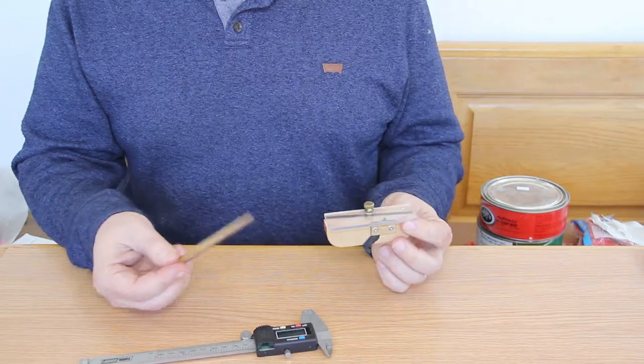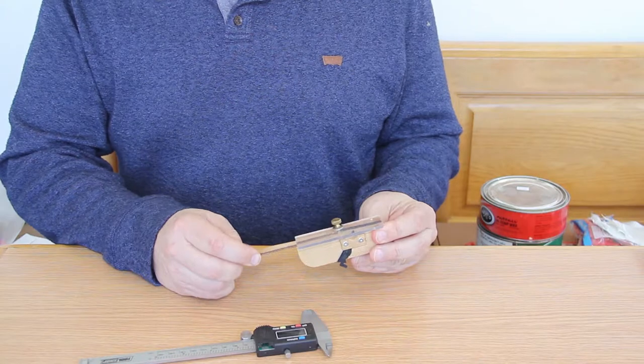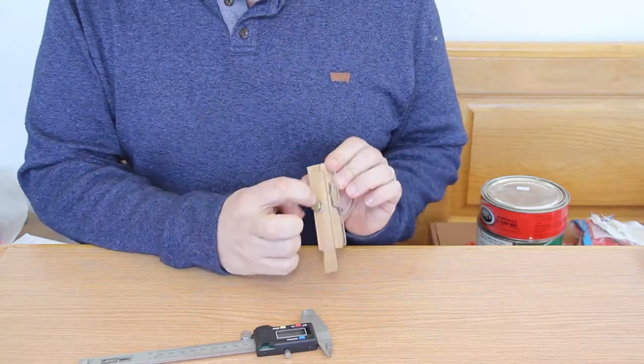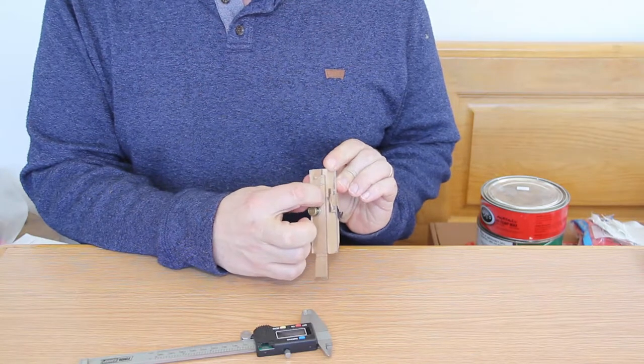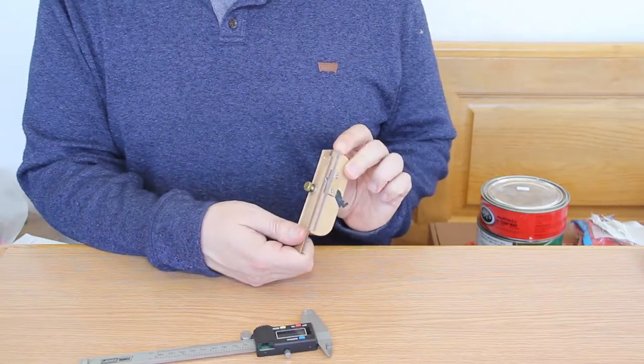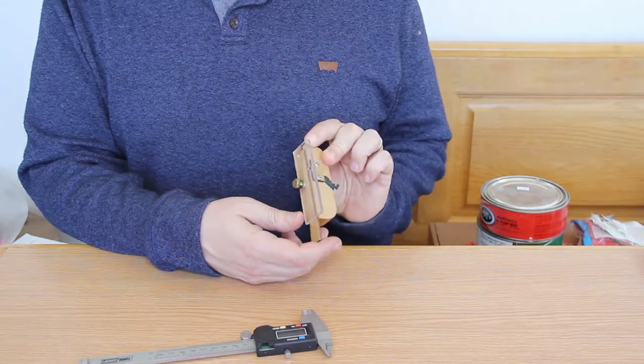The way it works is it has a kind of friction fit piece here that slides in, and if you can see through here there's a blade and then there's a space. You can put the balsa piece in there and slide it through, and that will get you the size of balsa that you need.